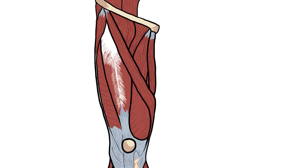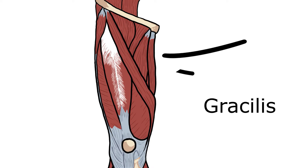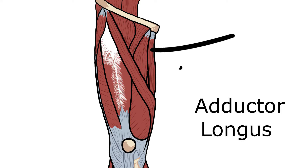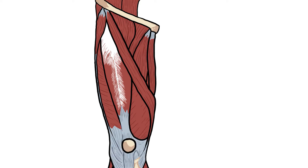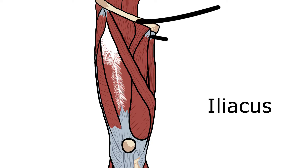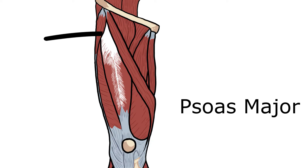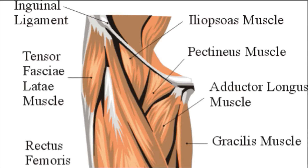The G is for the gracilis muscle medially. The A is for the adductor longus. I is for iliacus. P is for psoas major. And another P is for the pectineus.